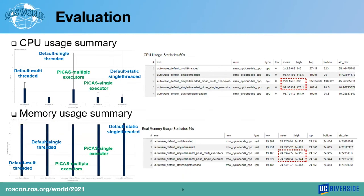This slide shows the result of CPU and memory usage. For CPU and memory usage, overall there is no big difference between ROS2 default and PICAS executor. As a short recap from these measurement results, PICAS executor achieves better performance in terms of latency, dropped messages, and jitter, with similar resource usage.